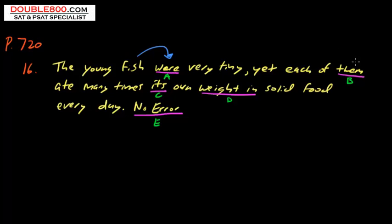Yet each of them. We know there are many fish. Them, that's plural. That's the objective case. We have a preposition. Each of them is correct.